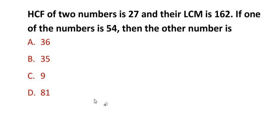Hello and welcome to my channel. In this video, we are going to solve an example on real numbers. The question is: the highest common factor of two numbers is 27 and their lowest common multiple is 162. If